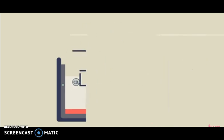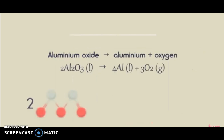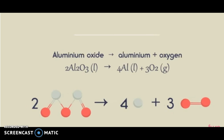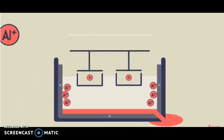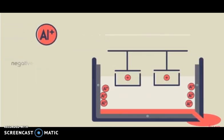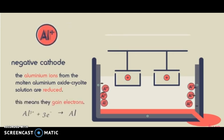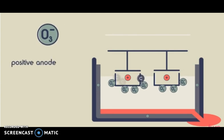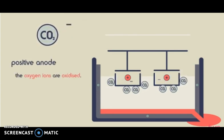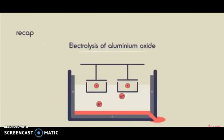The overall reaction is: aluminium oxide → aluminium + oxygen. At the negative cathode, the aluminium ions from the molten aluminium oxide-cryolite solution are reduced — they gain electrons. At the positive anode, the oxygen ions are oxidised — they lose electrons — and the oxygen reacts with the carbon anode to make carbon dioxide.